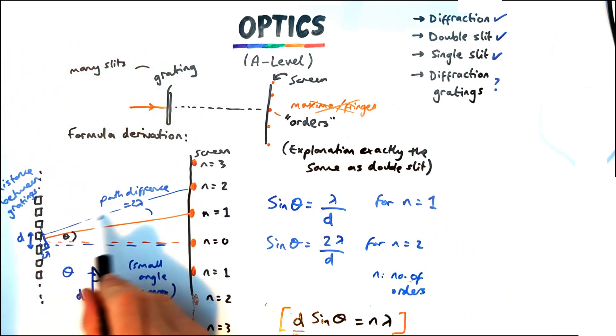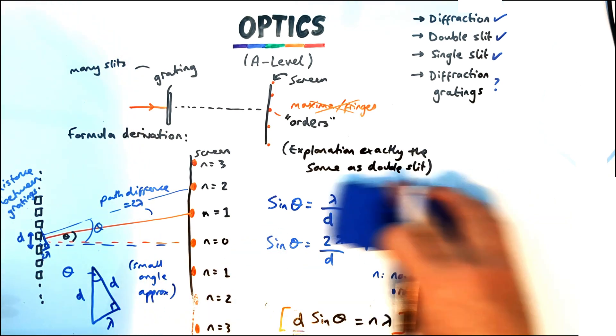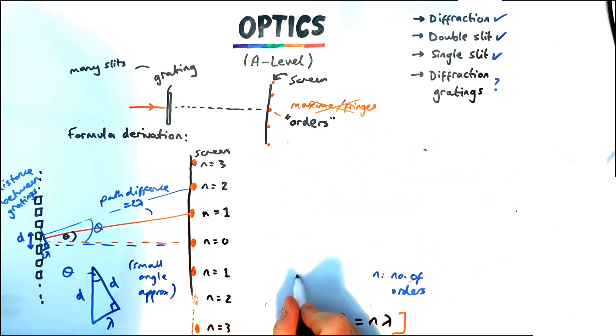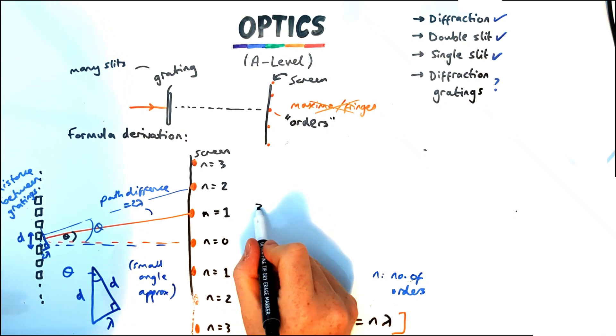Now one of the trickiest parts in exam questions is that sometimes they don't give you what d is the grating spacing, they'll give you the number of lines per meter or per millimeter.